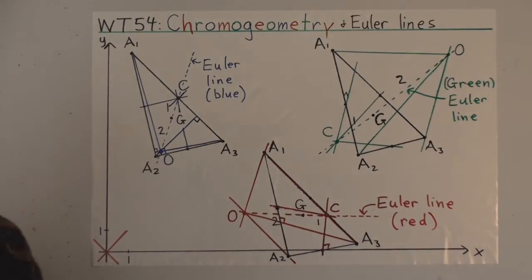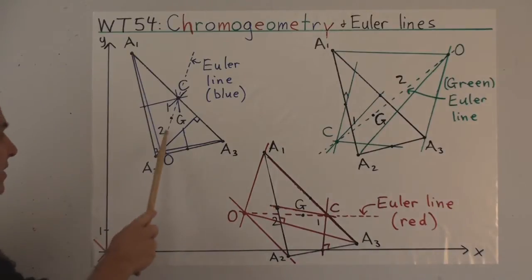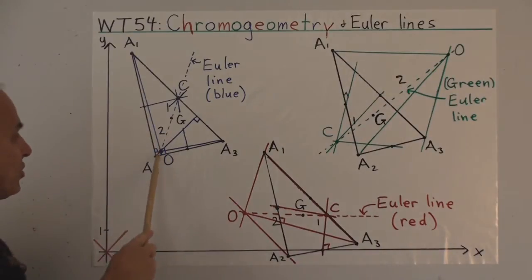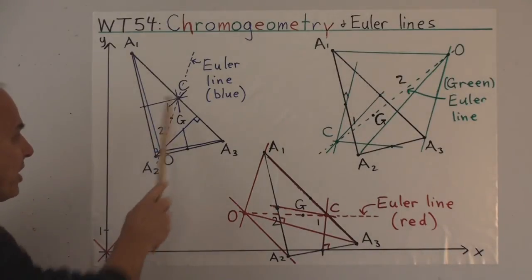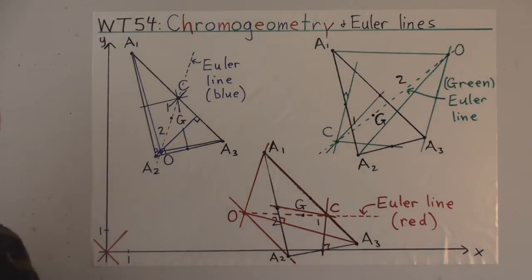Moreover, Euler discovered that these two segments are in the ratio of two to one.